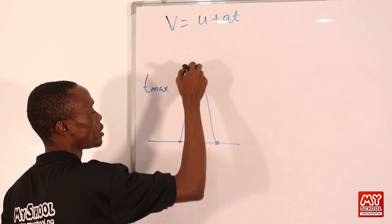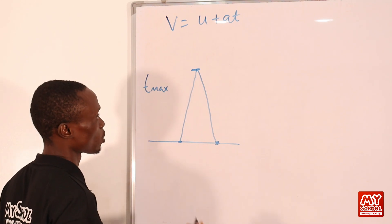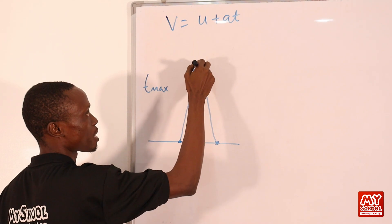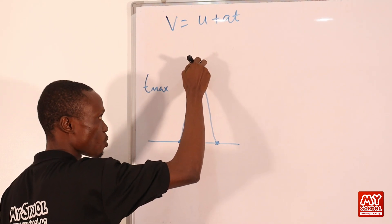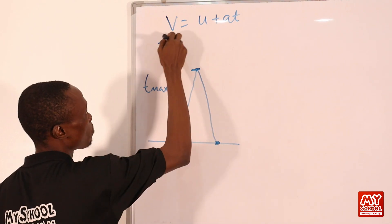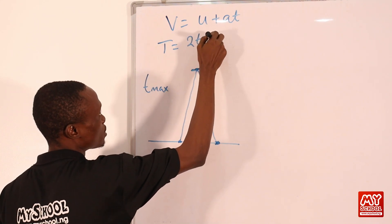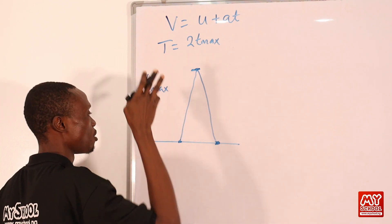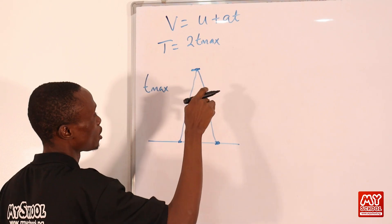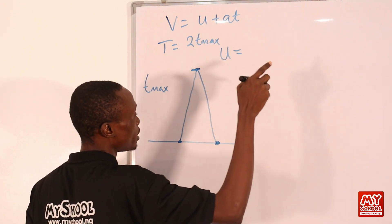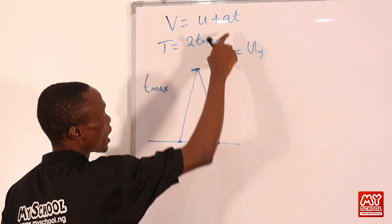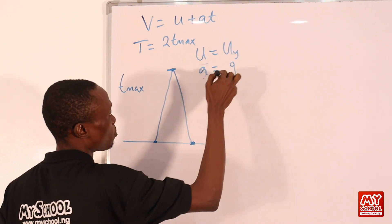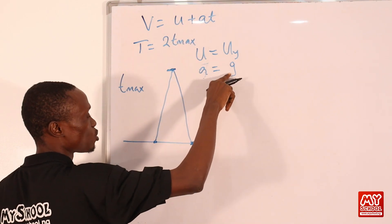An important point from motion under gravity: the time taken to move from the launch level to maximum height equals the time taken to fall back from maximum height to the launch level. Therefore, time of flight T = 2 × t_max. This motion concerns the vertical component, so u in our equation becomes u_y, and acceleration a becomes −g since the object moves against gravity.